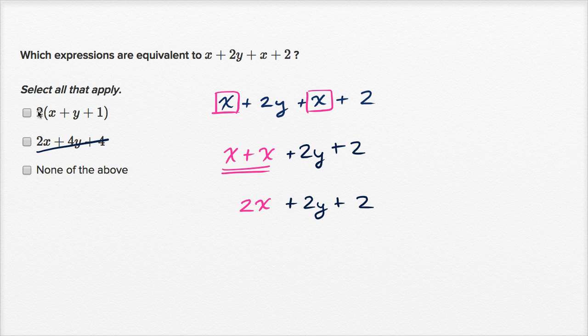Now this one's interesting. It looks like they have factored out a two. Let's see, if we factor out a two here, what happens? So we do see that two is a factor of that term, it's a factor of that term, and it's a factor of that term. So let's see if we can factor it out.